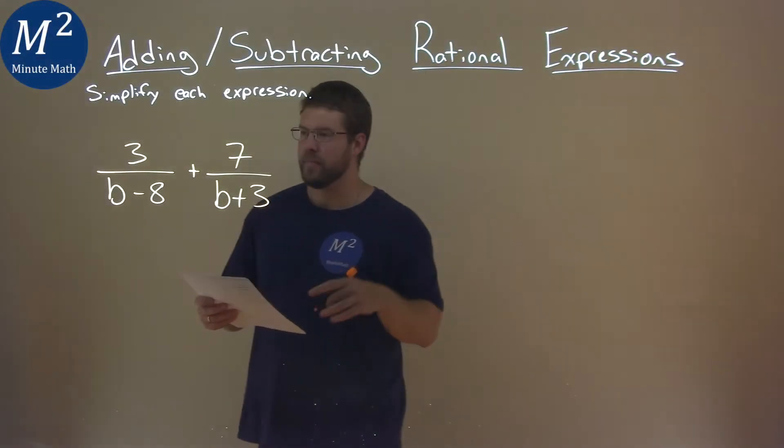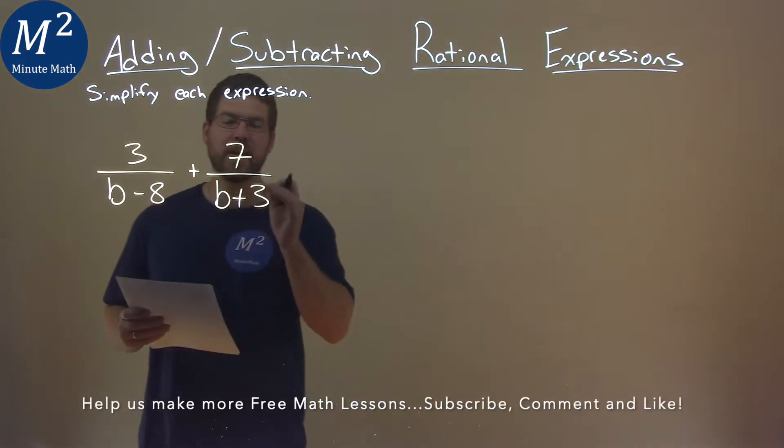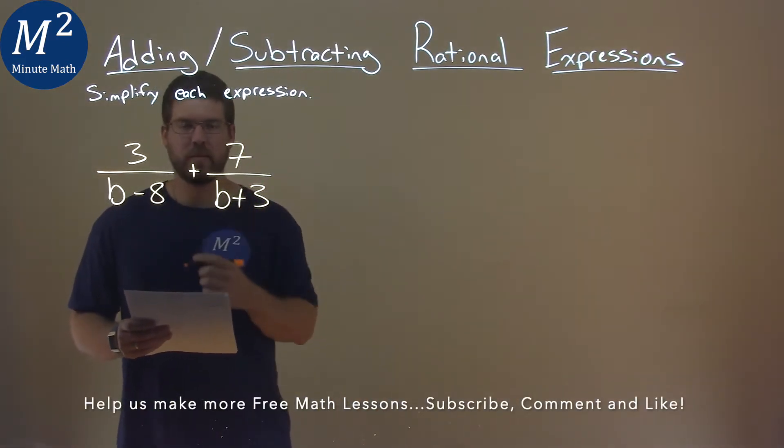We're given this problem right here: 3 over b minus 8 plus 7 over b plus 3, and we gotta simplify this expression.